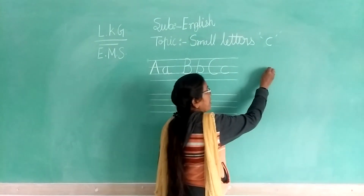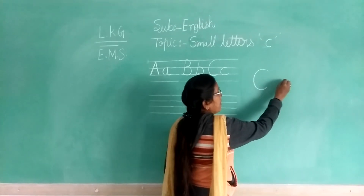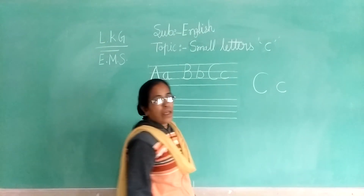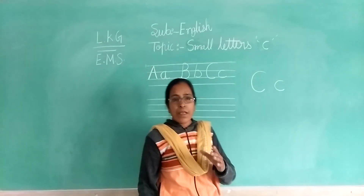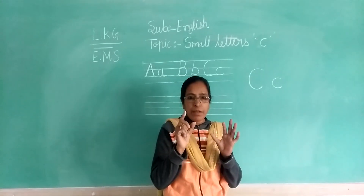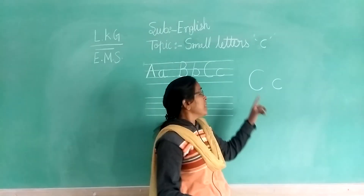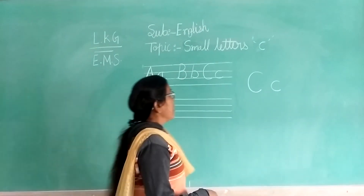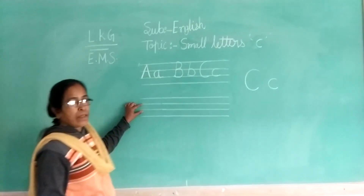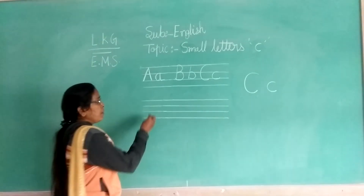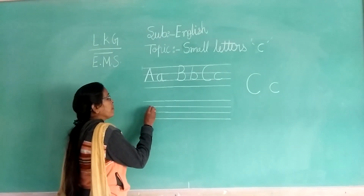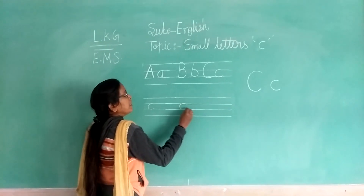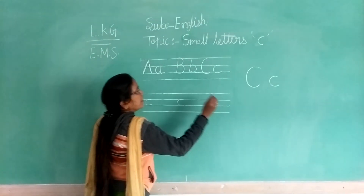Capital C and small c. Capital C — write big. And small c — write small, in between the lines. C. C. C.